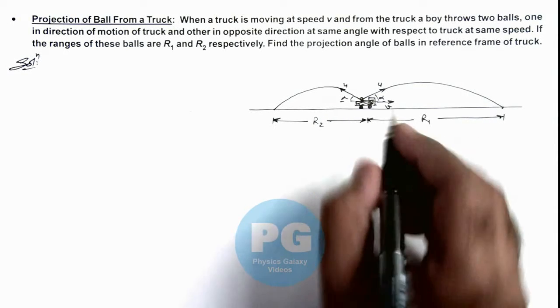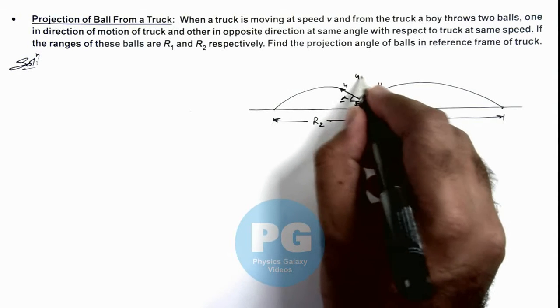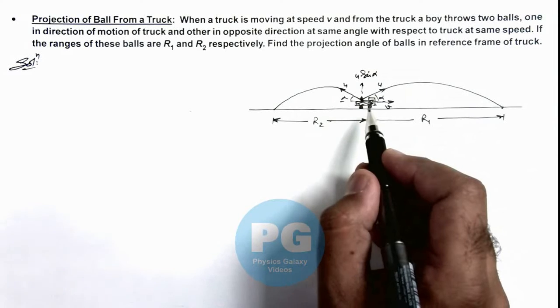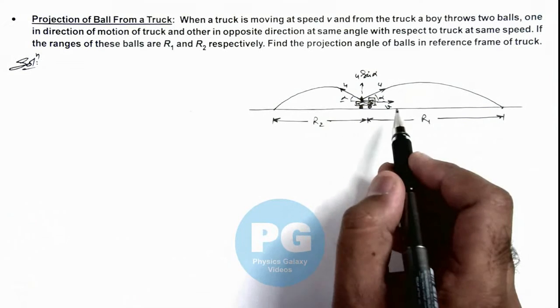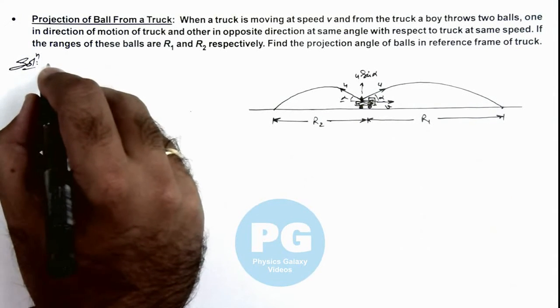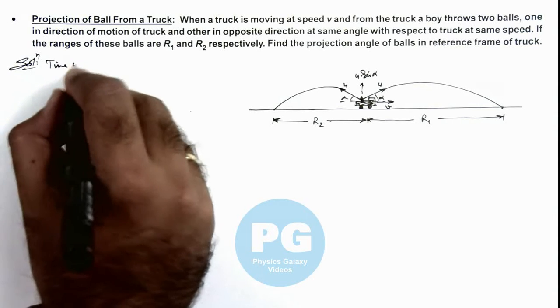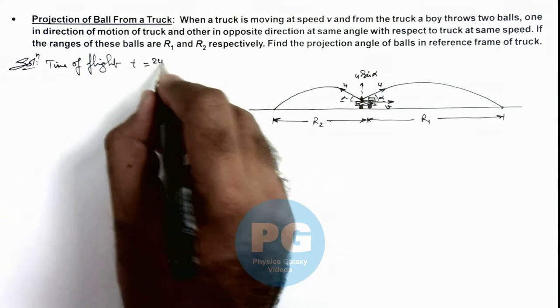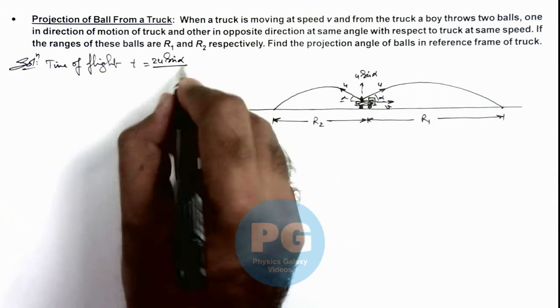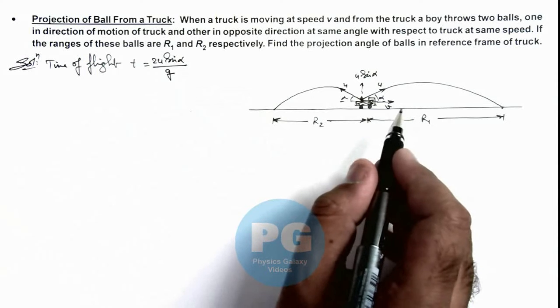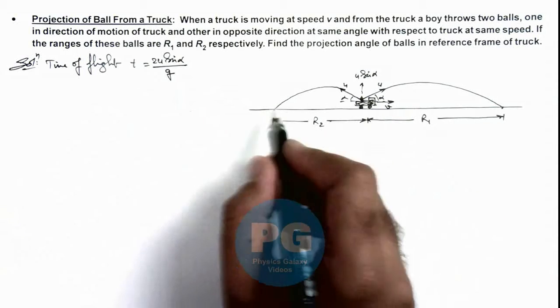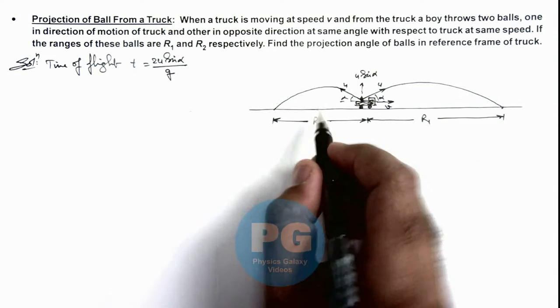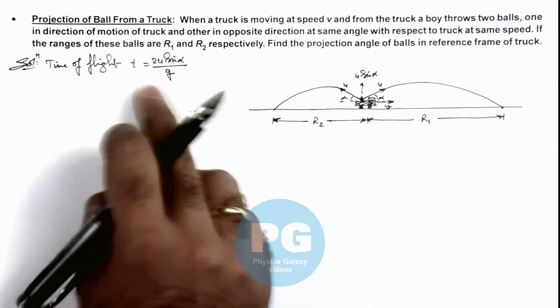Here in this situation we can see the upward projection speed will be u sine alpha and remain constant irrespective of truck's motion because truck is moving horizontally. So here we can write the time of flight for balls can be directly given as 2u sine alpha by g because time of flight is calculated by vertical motion of balls. That's why it remains same even if we calculate the maximum height attained by both these projectiles, that will also remain same because that is calculated by time of flight.